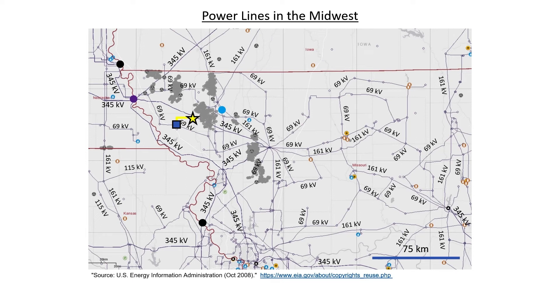Going back to our map of the power grid, the yellow line represents the connection between Maitland and the Browns Curve substation. The 69 kilovolt line leads to the Fairport substation, which from the map is a fairly large substation with a number of different high voltage lines coming together. One of those power lines connects the Fairport substation to the Cooper nuclear facility. What we can conclude from the path drawn on the map is that the little town of Maitland, Missouri gets some — perhaps most — of its electricity from the Cooper nuclear facility.